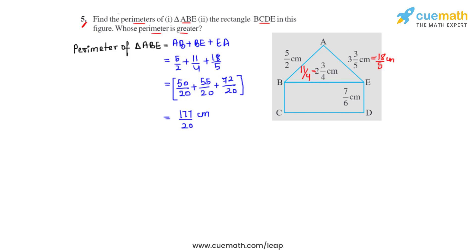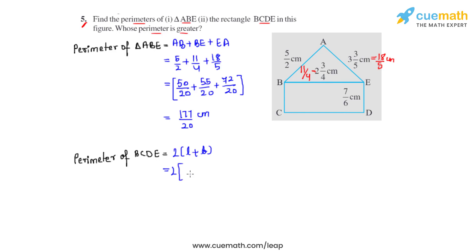Next, we find the perimeter of rectangle BCDE. The formula for the perimeter of a rectangle is 2 times (length plus breadth). The length BE is 11/4, and the width is 7/6 as given in the figure, so we add these two values.